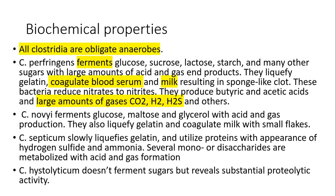Biochemical properties: All clostridia are obligate anaerobes, but Clostridium perfringens is not so strict and can live in less strict anaerobic conditions. Clostridia causing gas gangrene have high biochemical activity. They ferment many sugars — glucose, sucrose, lactose, and others — with large amounts of acid and gas production. That is why the disease is called gas gangrene: because of the large amount of gas in the tissue. They also liquefy gelatin, coagulate blood serum and milk, reduce nitrates, and produce butyric and acetic acids.